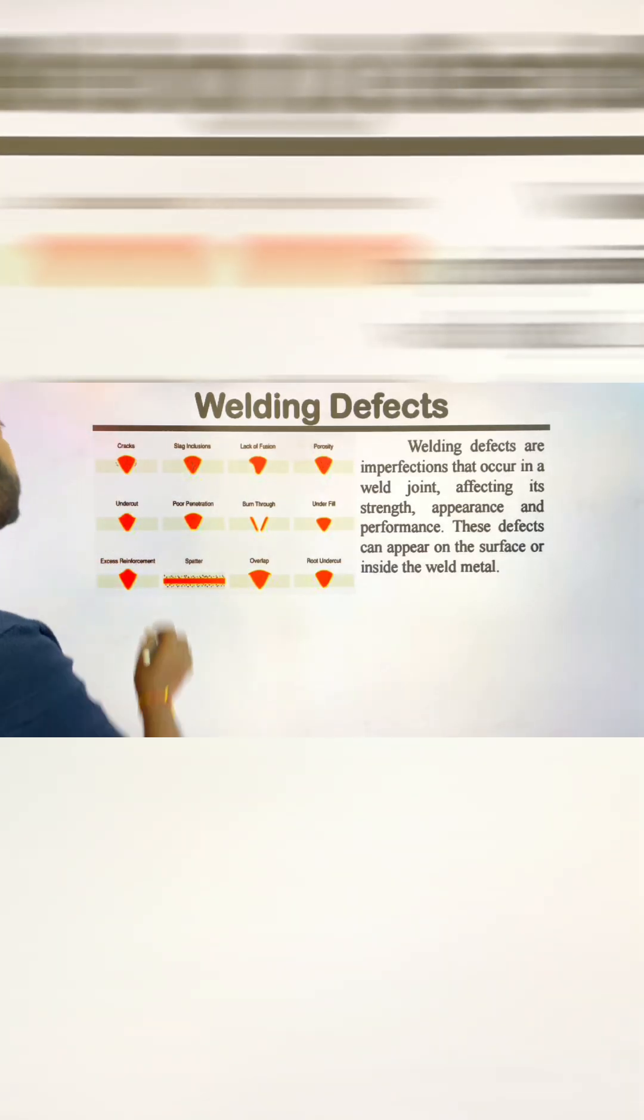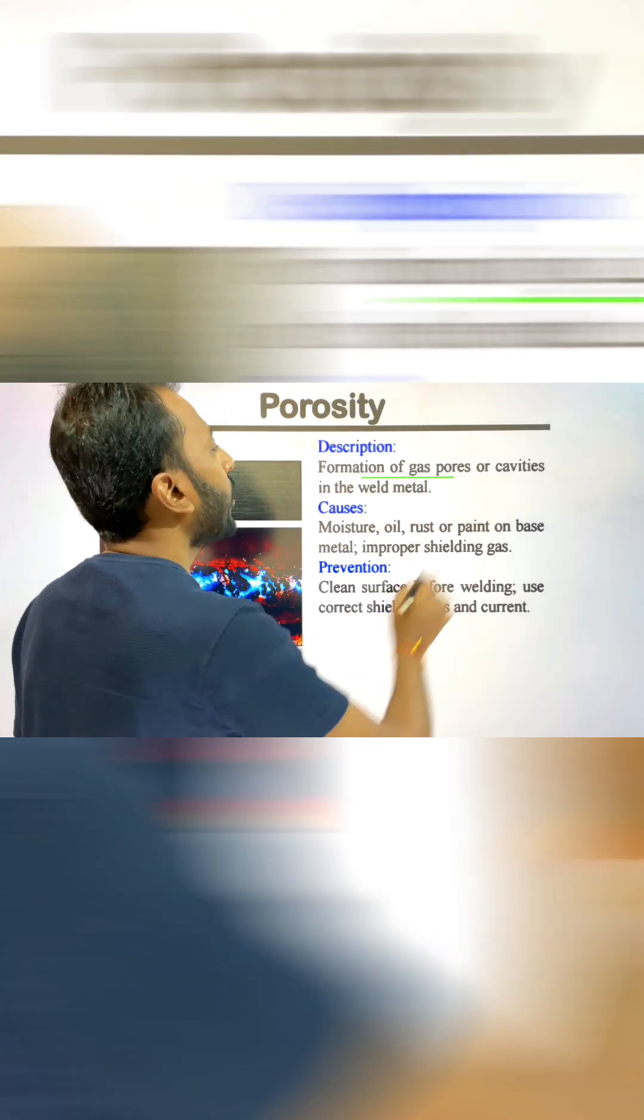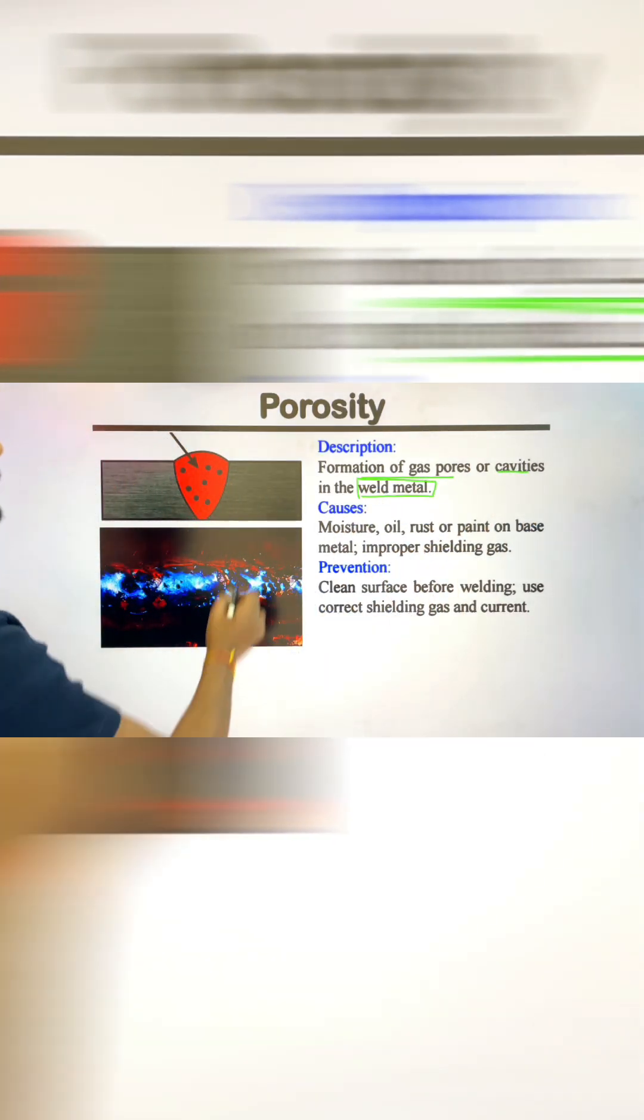Here we can see different kinds of welding defects. These are imperfections that affect welding performance. Let's now see the different kinds of welding defects, such as forces or cavities inside the weld metal.